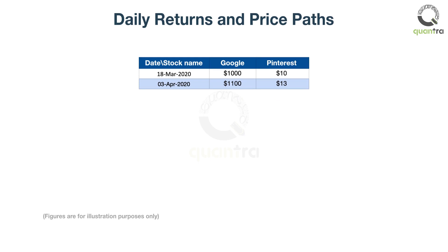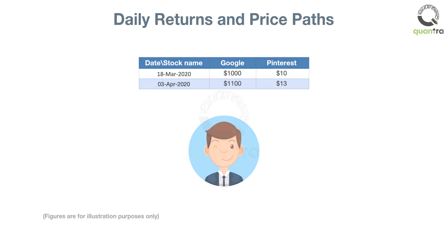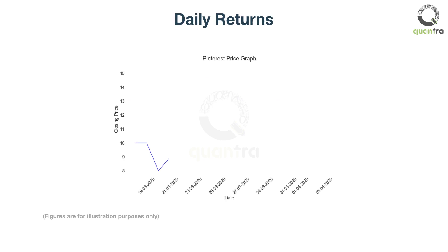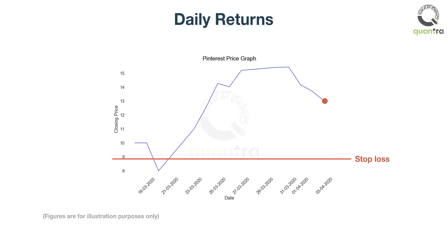You know the starting and ending value of both the stocks, but what happened in between is still unknown. For instance, if Pinterest had fallen by 20%, then the stop loss would have hit for many traders. They would have failed to capture the 30% rise from the purchase price. Therefore, it is important to know the path.